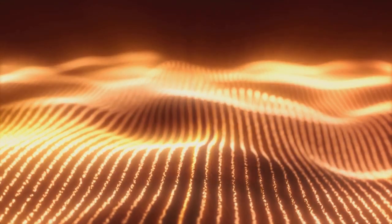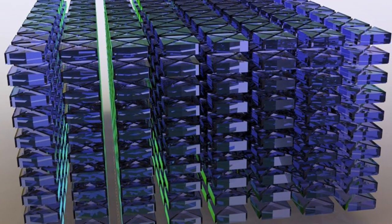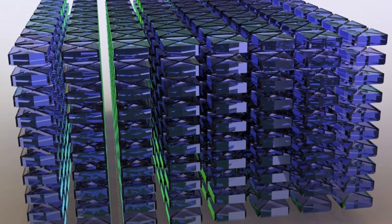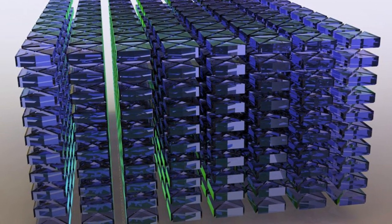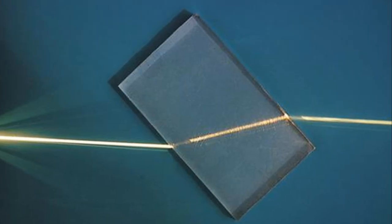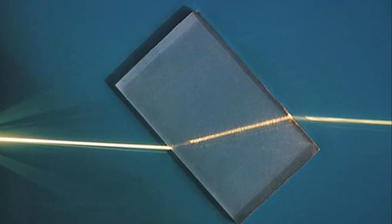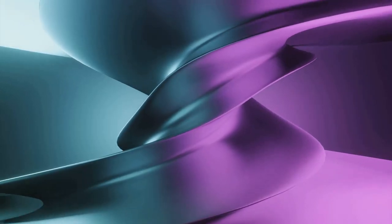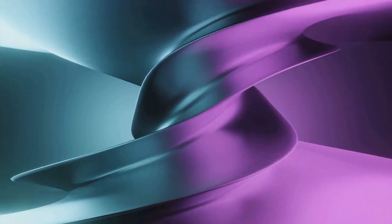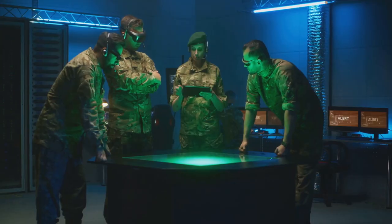You see, metamaterials are not your average run-of-the-mill substances. They're engineered with properties that aren't found in nature. And one of these properties is their ability to manipulate electromagnetic waves. This is where the magic happens. Think about how a straw looks bent when you put it in a glass of water. That's because the water is bending, or refracting, the light waves. Now, what if we could design a material that could bend light waves around an object, making it invisible to the eye? That's exactly what metamaterials can do.